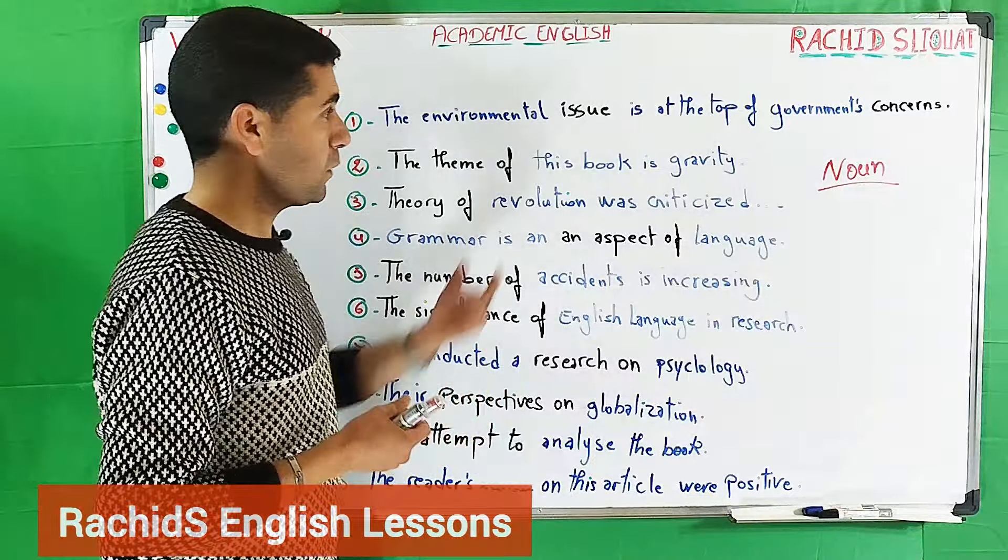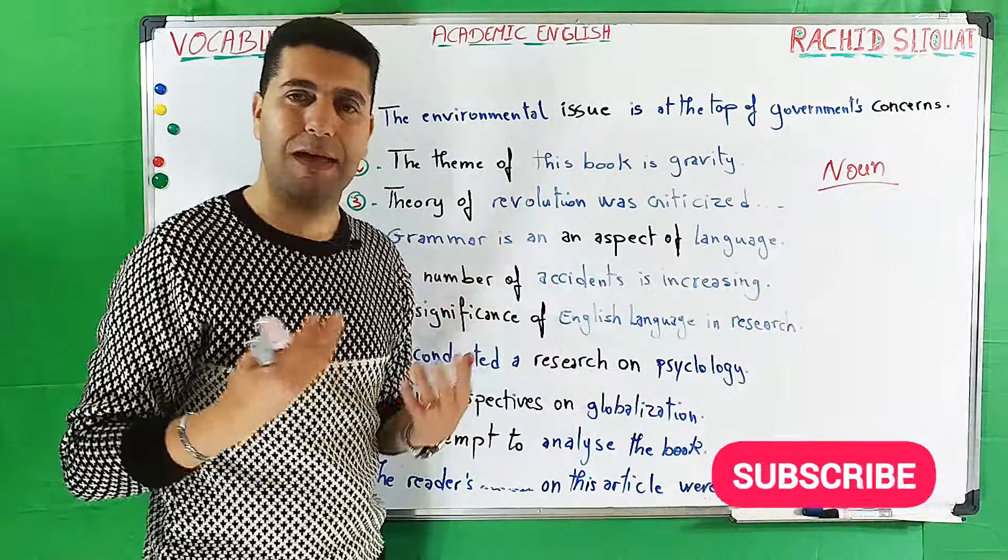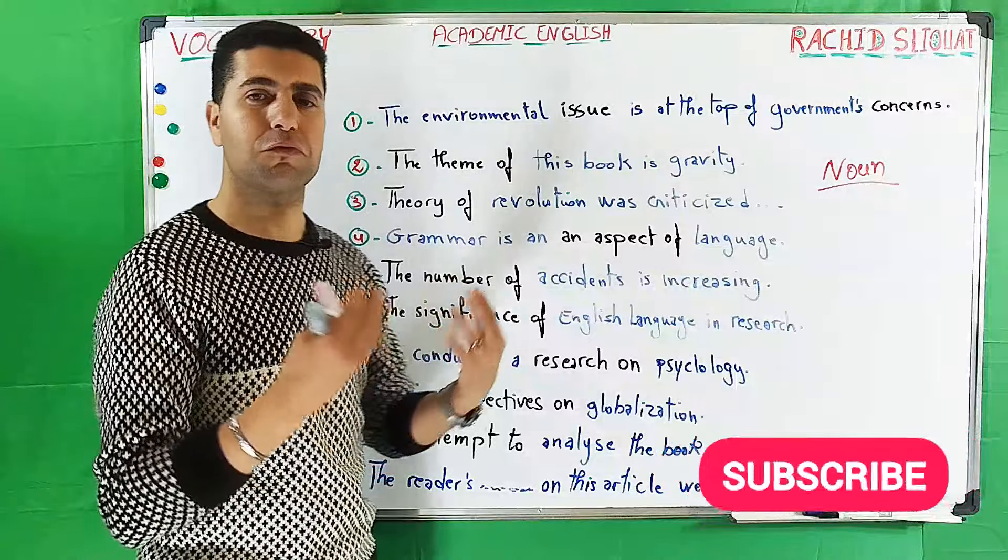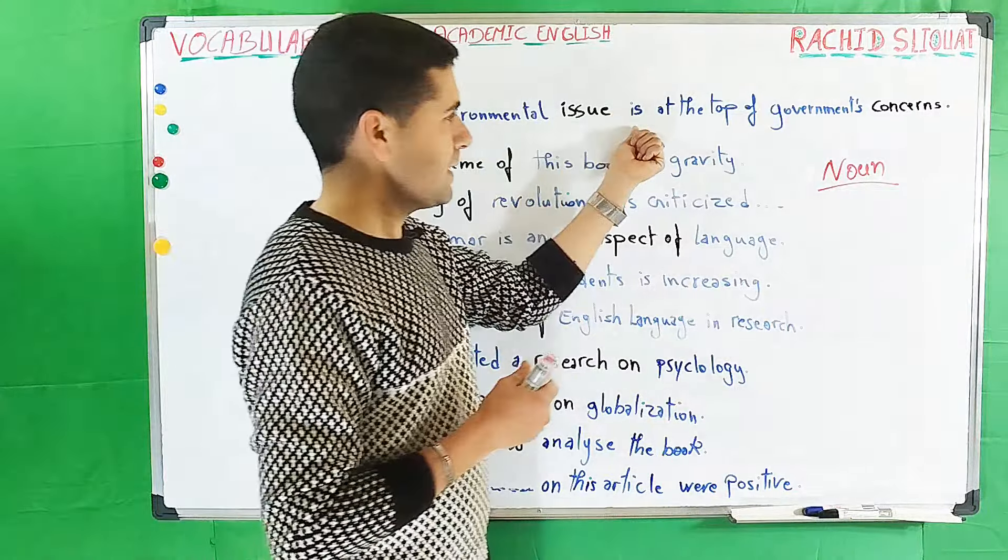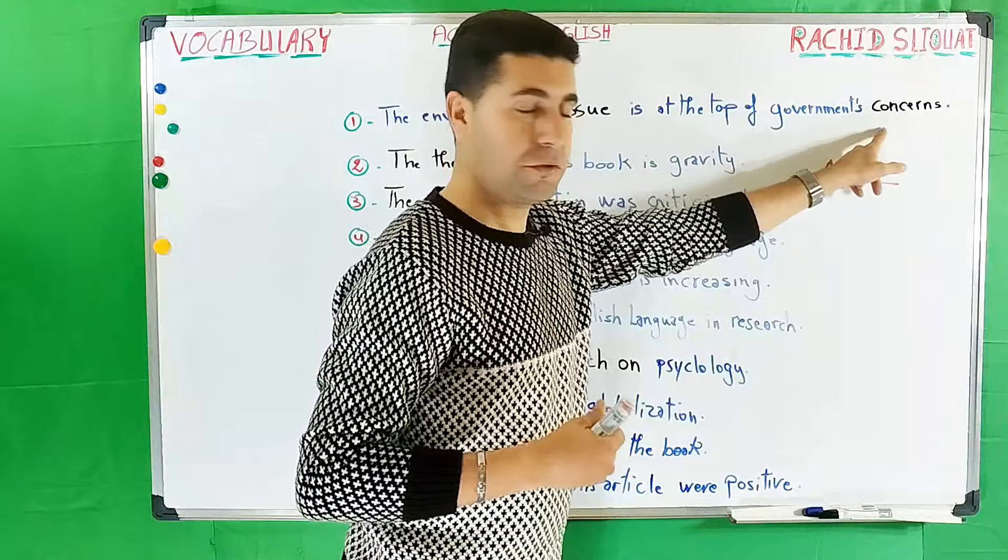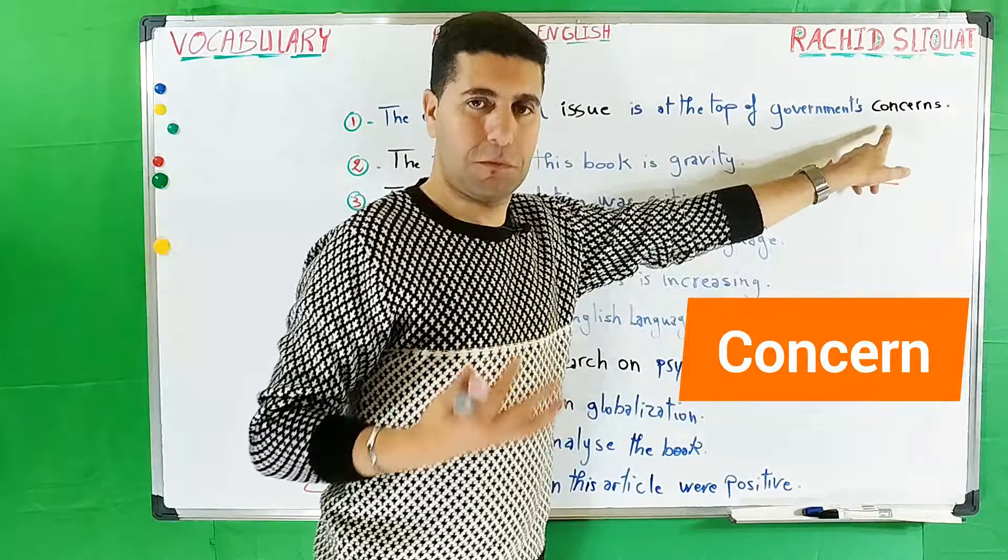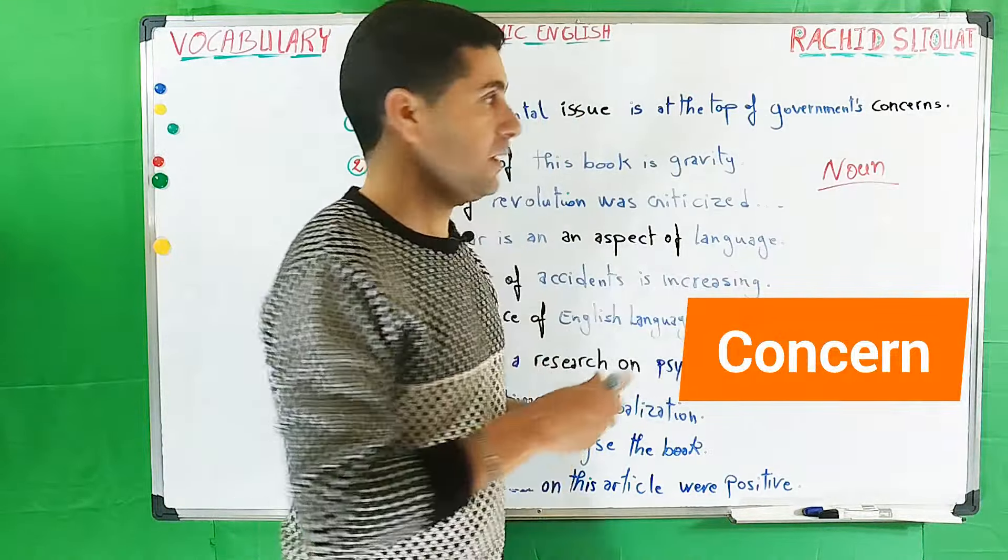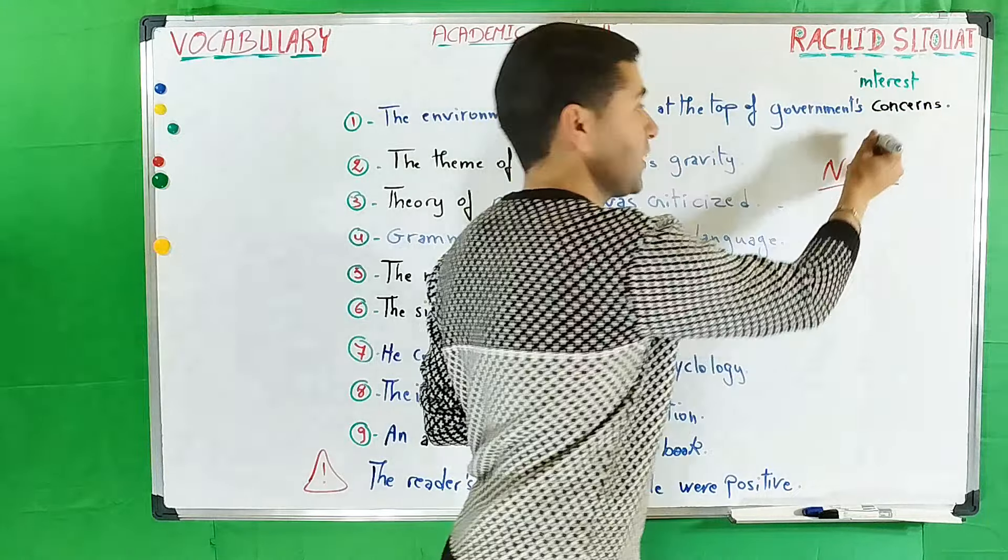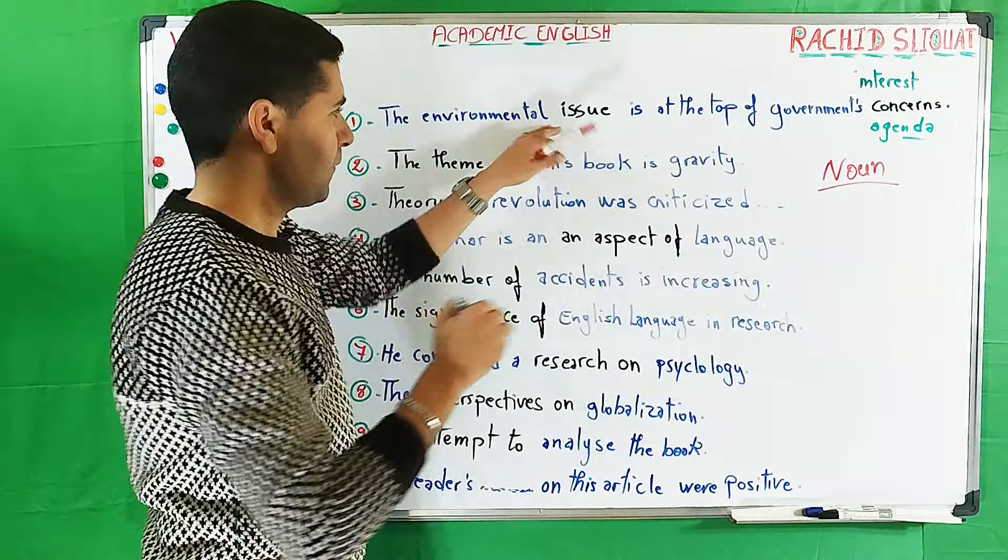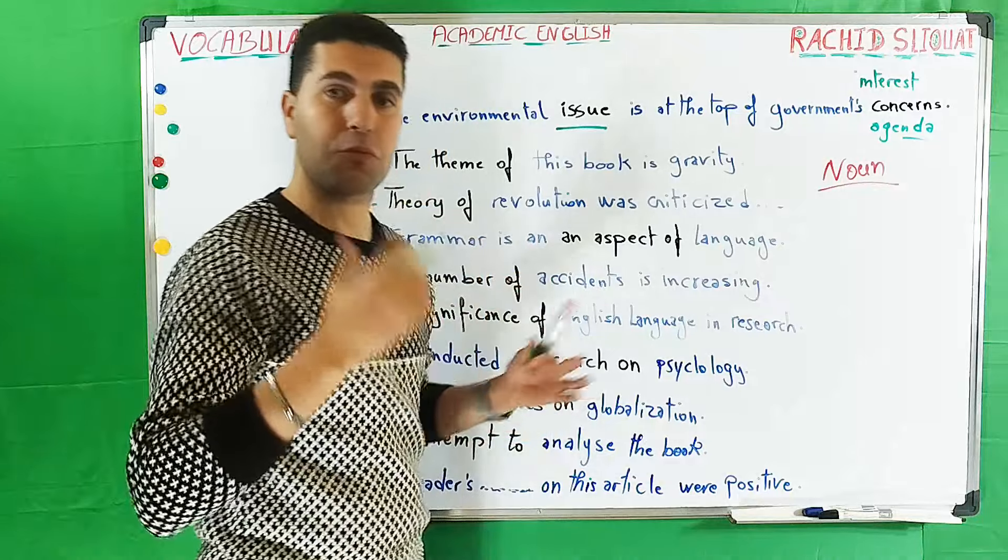We can use it with society, for example, social problems or social issues. It's at the top of the government concern. When I say concern, it can be considered as interest, so we can say interest or agenda. Here we have issue, matter, or problem, and concern like agenda or interest.